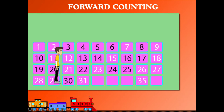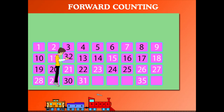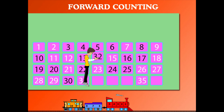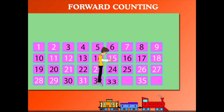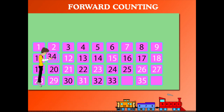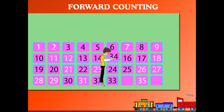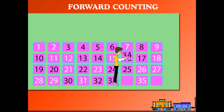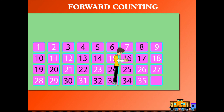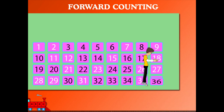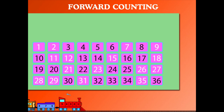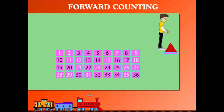After 31 is 32, then 33, then 34. After 35 is 36. Sammy has counted 36 balls that he takes away.